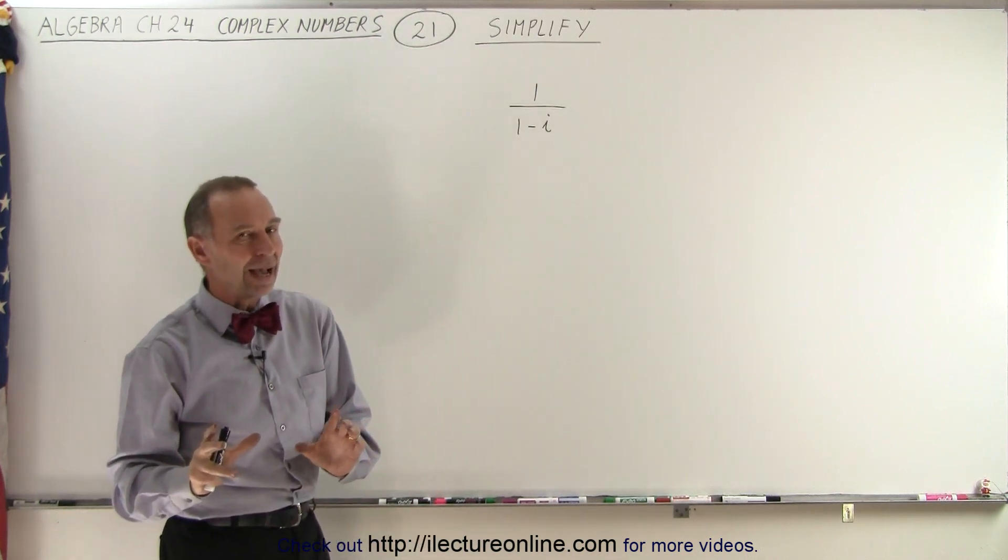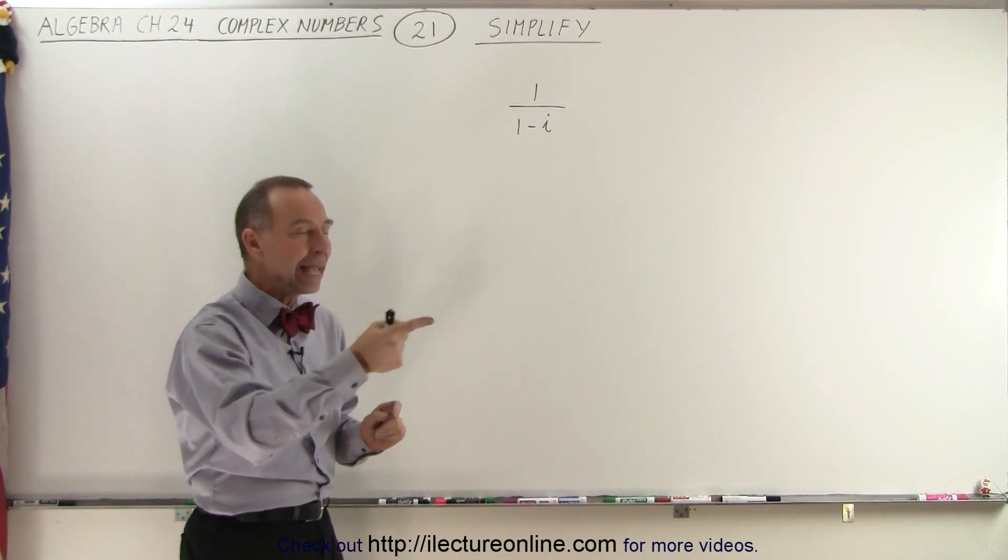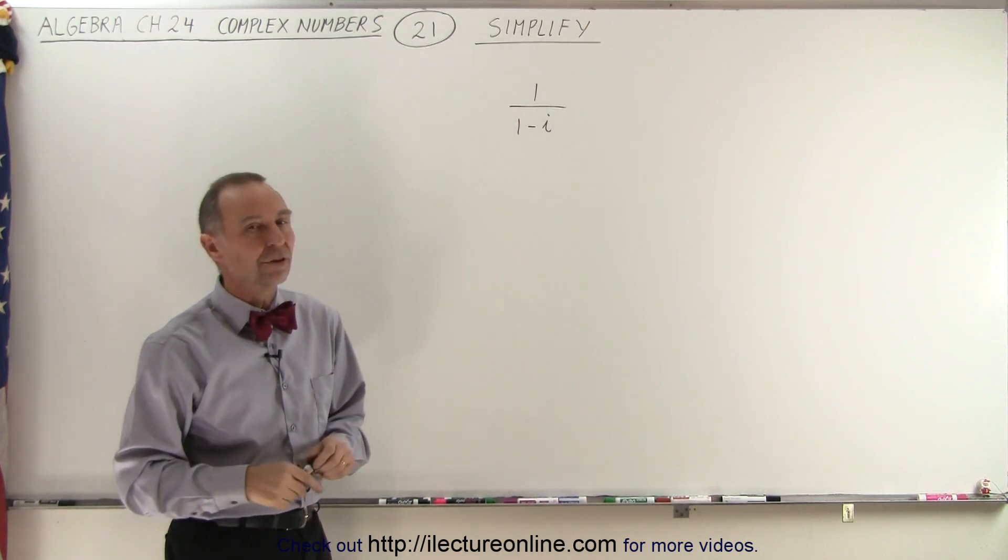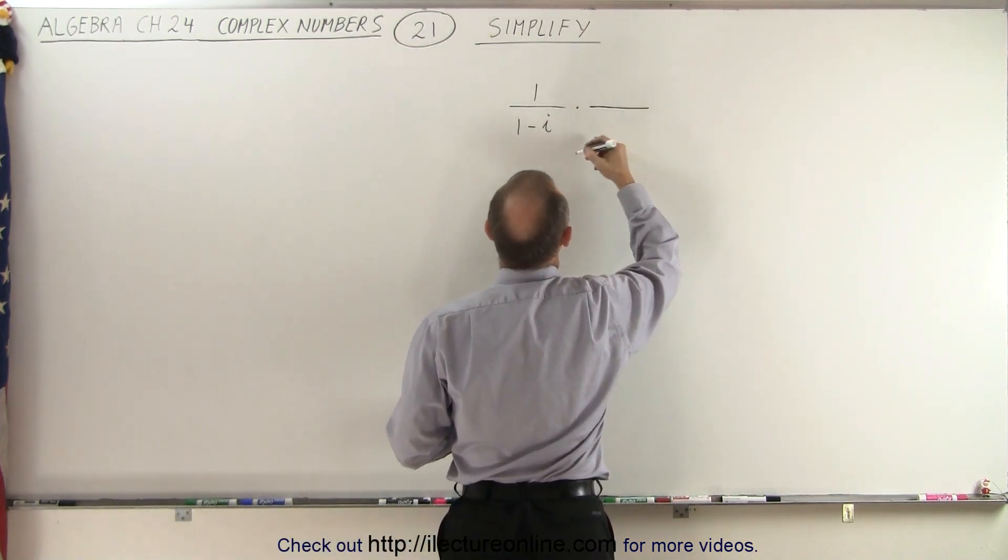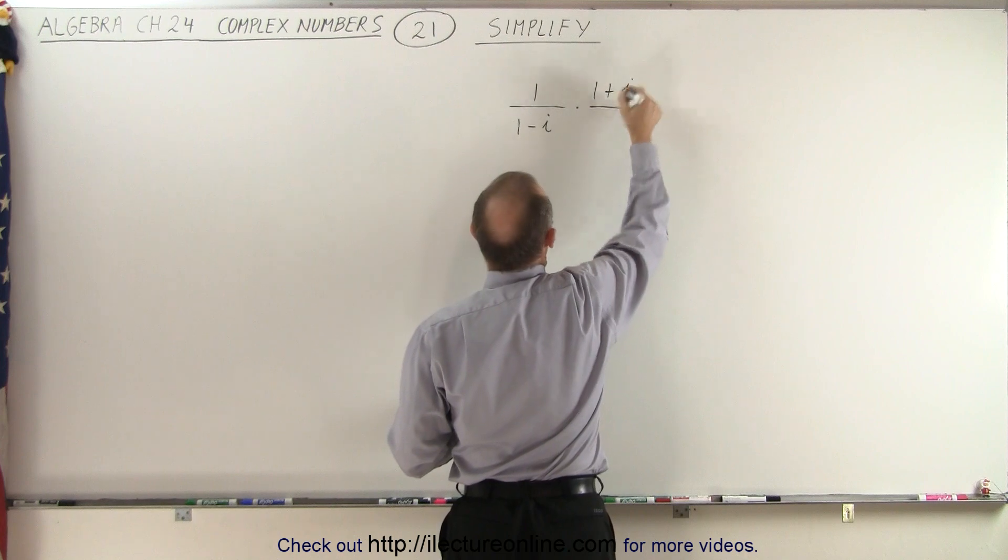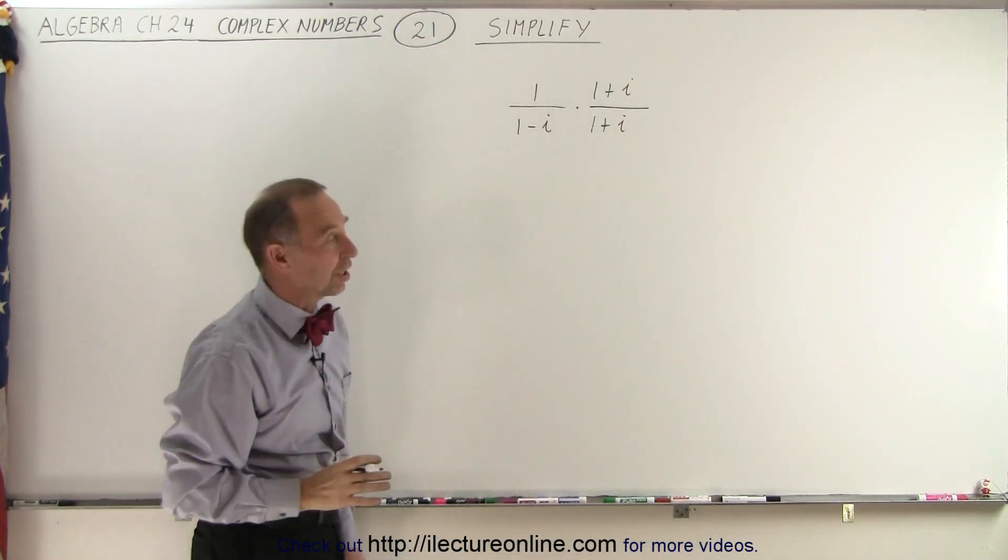And the trick is that if we have a complex number in the denominator, we must multiply the numerator and the denominator by the complex conjugate of the denominator. Which means we're going to multiply both the numerator and the denominator by 1 plus i and 1 plus i. Notice that this is equal to 1, so we haven't really changed anything.